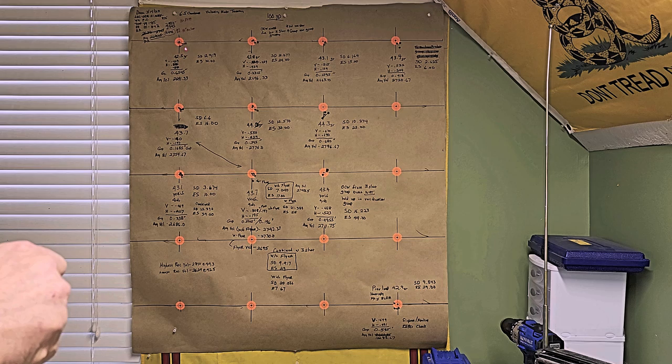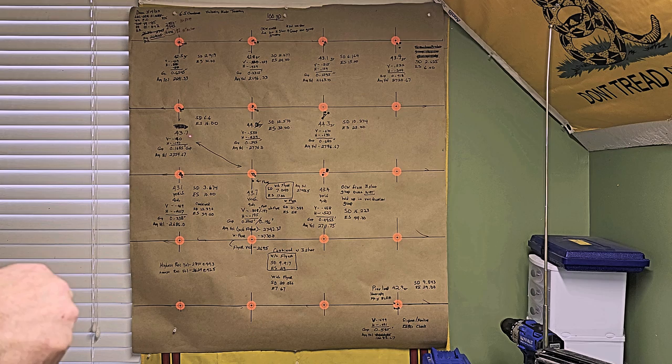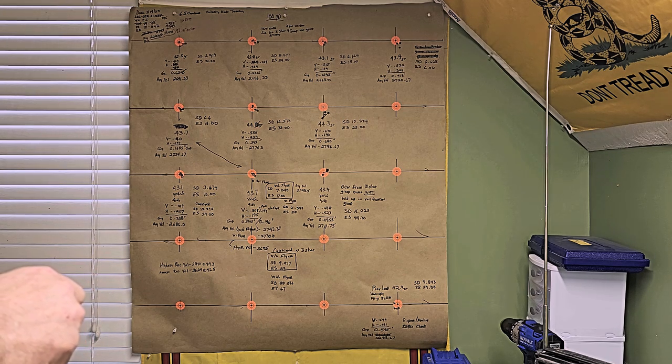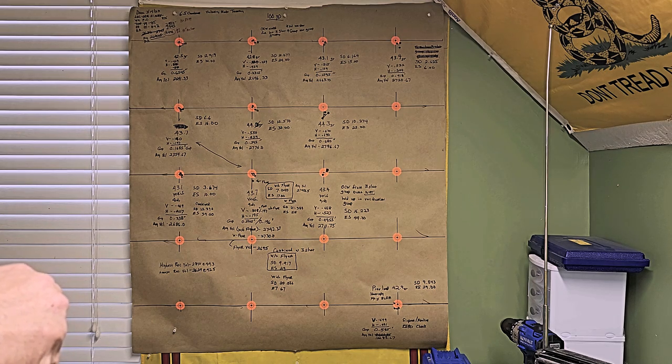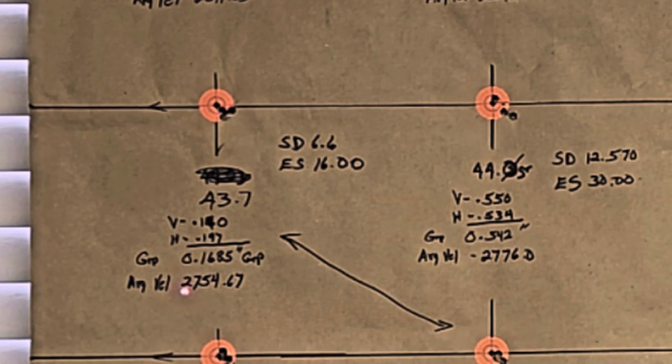So you can see the groups here from 42.5, 42.8, 43.1, 43.4, 43.7, 44, and 44.3. The very best group up here came at the 43.7. That group was 0.1685. These were all fired at 100 yards, and you can see on that 43.7 group that's a three-shot group with an average velocity of 2754.67, SD of 6.6, and extreme spread of 16.